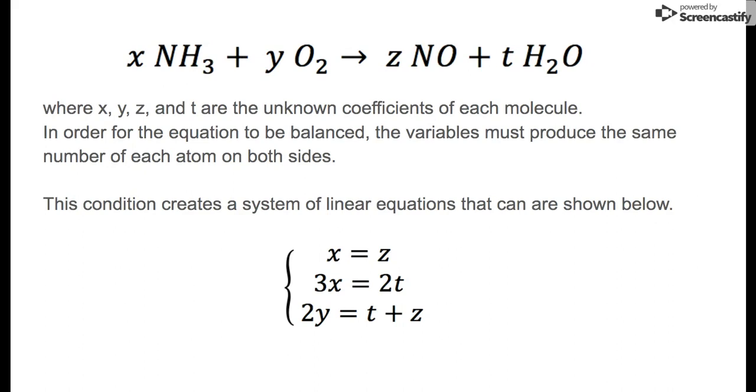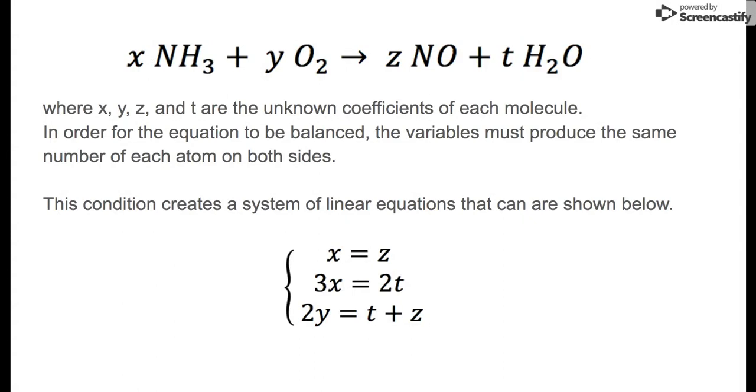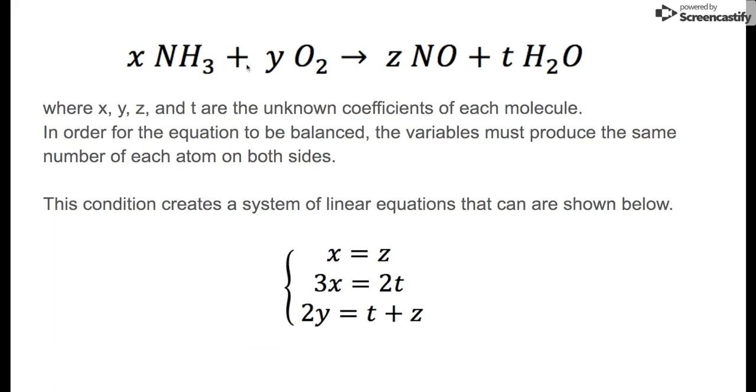For example, let's look at the coefficients of nitrogen. On the left side of the reaction, x is the coefficient for nitrogen, so we know on the left side there is x number of atoms. This has to equal the number of atoms on the right, which is z, so x has to equal z—and this gives us our first equation. For the second equation, let's look at the coefficients of hydrogen atoms. On the left side, x times 3 gives us the number of atoms, and this has to equal the number on the right side, which is t times 2.